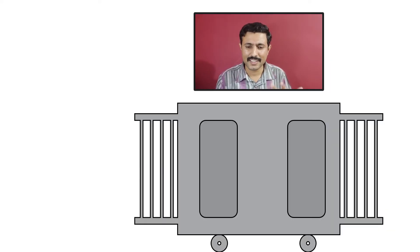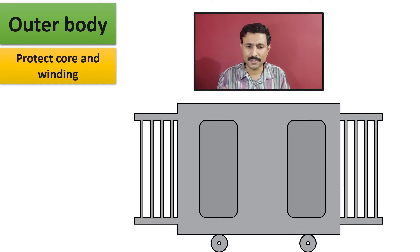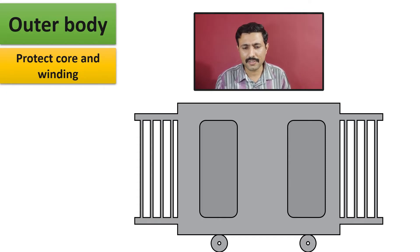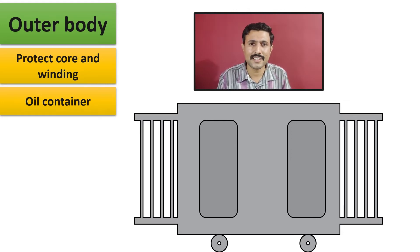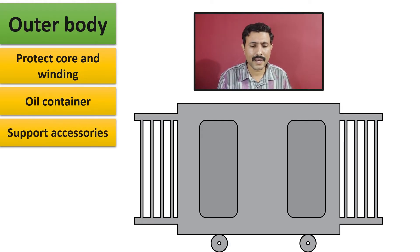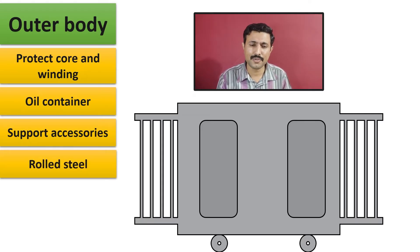The outside of transformer is its body, known as the outer body of transformer. This outer body is used to protect the core and winding from outer conditions. Another purpose of this outer body is to behave as a transformer oil container, because all the transformer winding and its core is submerged in oil placed inside this outer body. One more use of this outer body is to provide support for all the accessories. This outer body is constructed of rolled steel material to provide strength.